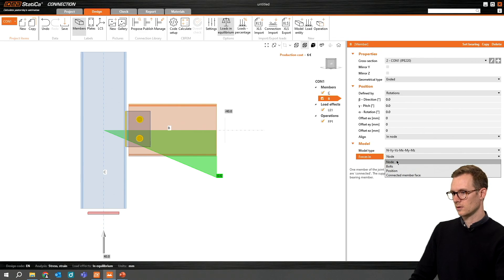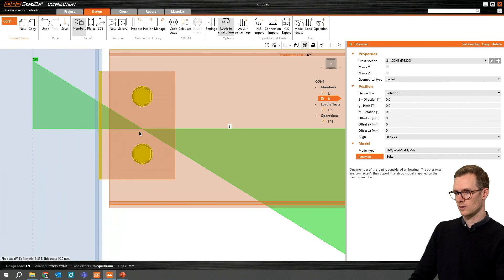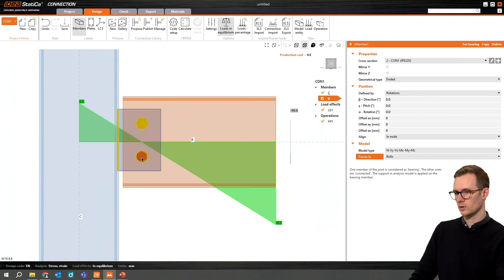We can try to change it from node to bolts. So this is the correct position. Now we see that there is zero moment in the position of the bolts or the hinge.